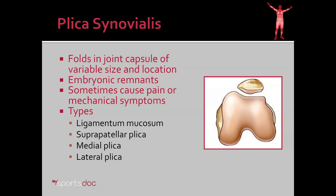The technical term for plica is plica synovialis. When we use the term plica, what we're referring to is folds in the joint capsule of variable size and location. These folds are embryonic remnants that occur during normal joint development. However, sometimes they persist into childhood or adulthood and then mechanical symptoms in the knee result.